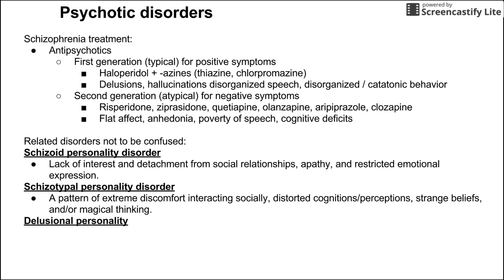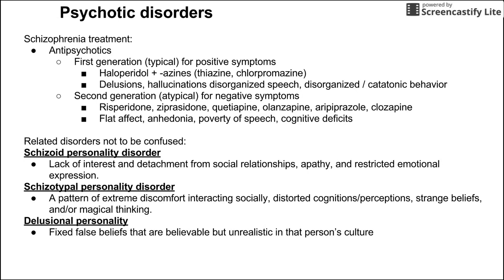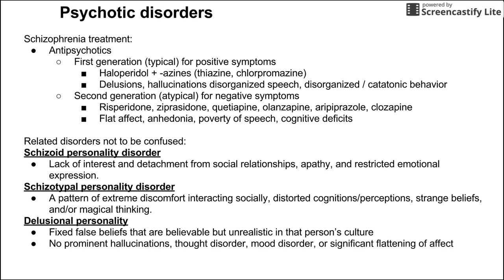Delusional disorder involves fixed false beliefs that are believable but unrealistic within that person's culture — for example, a woman who believes she is secretly married to a celebrity. A person with delusional disorder has no prominent hallucinations, thought disorder, mood disorder, or significant flattening of affect that would qualify them for another psychiatric illness. It's almost a diagnosis of exclusion: fixed false beliefs that don't significantly impact daily functioning. This concludes this brief video on psychotic disorders in the DSM-5.